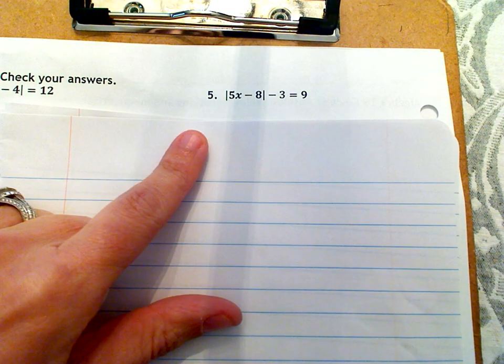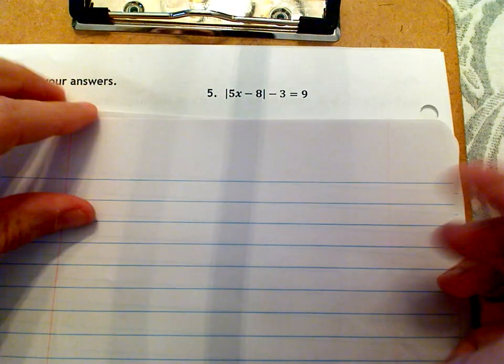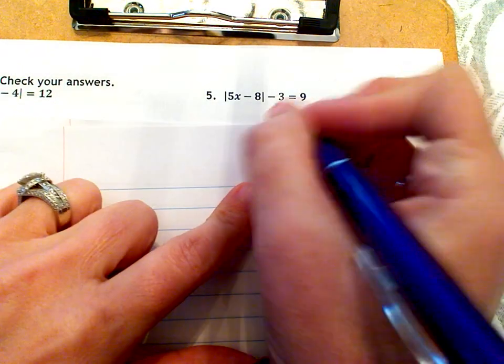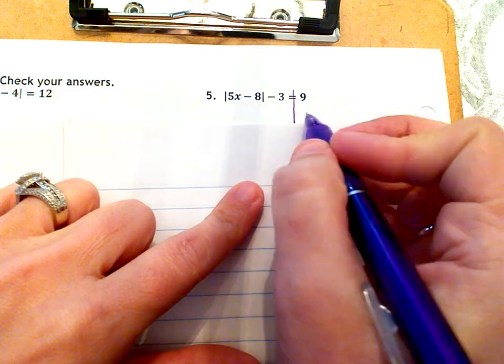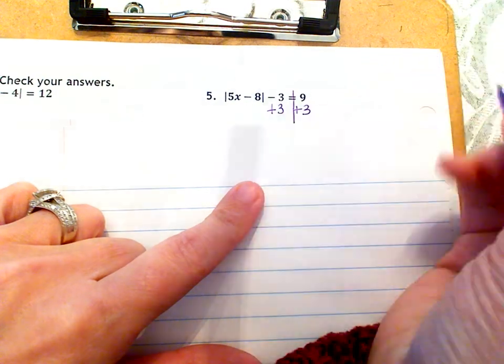Number five. Before we can do anything, we've got to get the bars by themselves. So the first thing we want to do is get rid of anything on the outside. Right now we have a minus three that's on the outside of the bars, so we need to get rid of it. So to do that, we're going to add three.